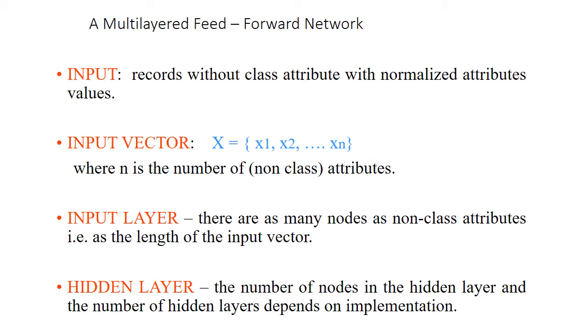Now the input layer: there are as many nodes as non-class attributes, meaning the length of the input layer. If there are n attributes then there will be n nodes in the input layer. Coming to hidden layer, the number of nodes in the hidden layer and the number of hidden layers depend on the implementation. Who is implementing that particular multi-layer feed forward neural network will decide how many hidden layers are required based on the problem statement and implementation.